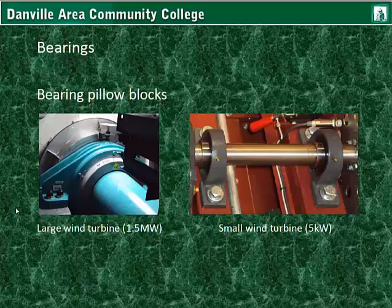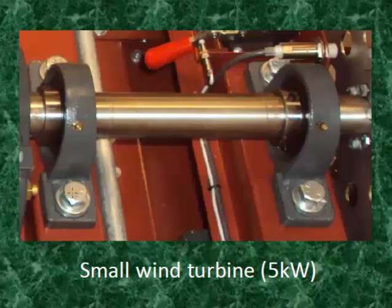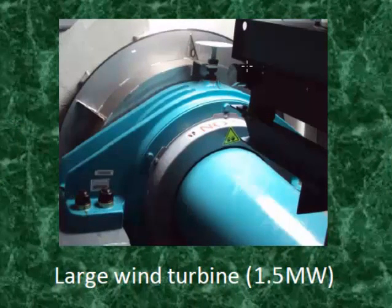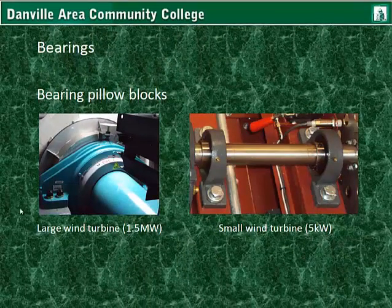Bearing pillow blocks: a pillow block is basically an encasement for the bearing. It provides a housing so it can be bolted to a chassis or some framing. On a wind turbine, the high speed and low speed shafts are mounted into bearing pillow blocks. These have grease fittings, so grease can be added while performing maintenance. In a larger 1.5 megawatt wind turbine, the bearing pillow block encases the bearing, which is bolted in, and the pillow block is bolted to the bed plate. This is a very large bearing — the entire bearing pillow block is approximately 4 feet wide. They have to hold the stresses created by the rotor and by the large shaft itself.